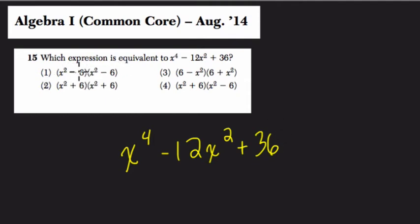One way we could do it is distribute, or use the distributive property in each pair of binomials to see which one gets us this trinomial. However, I think an easier way to do it is the reverse, to factor this and see which of these matches the factored form. So let's do that.